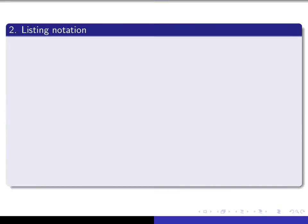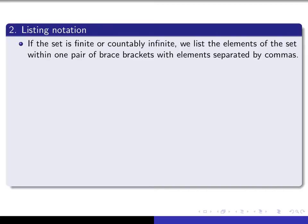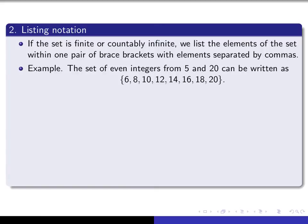We also have something called listing notation. What we do is make use of a pair of brace brackets, and then separated by commas, we list the elements of the set. Here's an example: if you want to notate the set of all even integers from 5 to 20, you can do it in this way. You see the brace brackets and you see the commas.